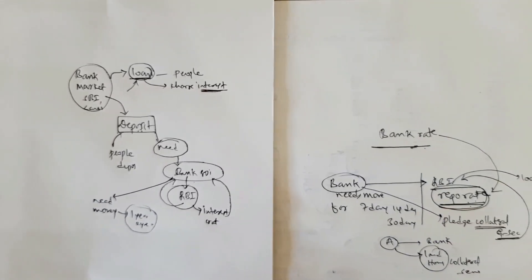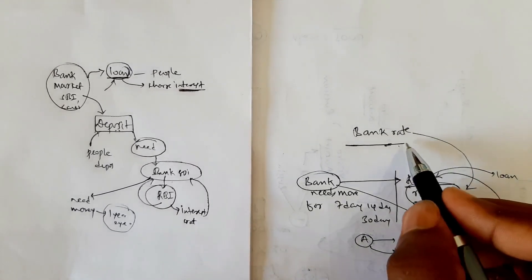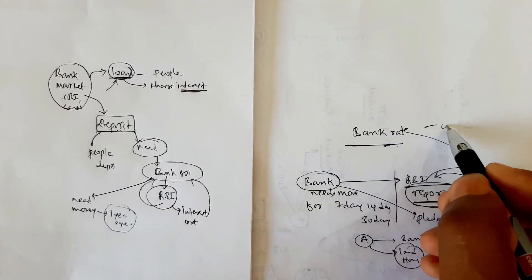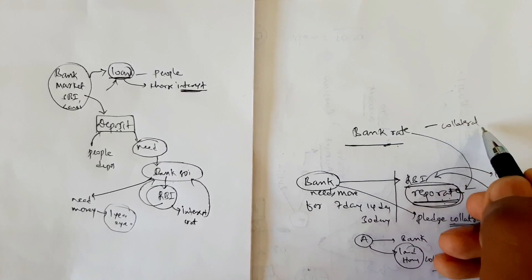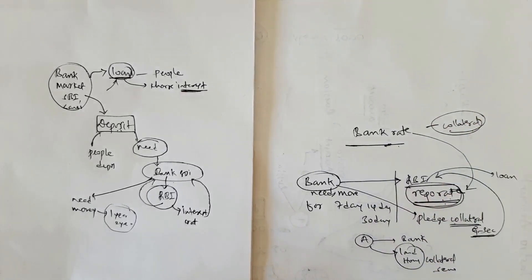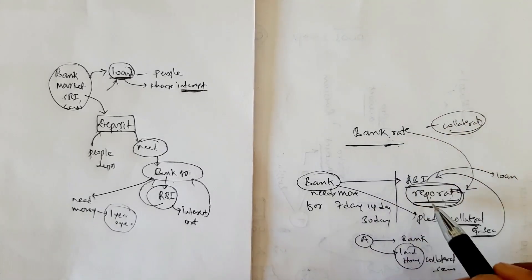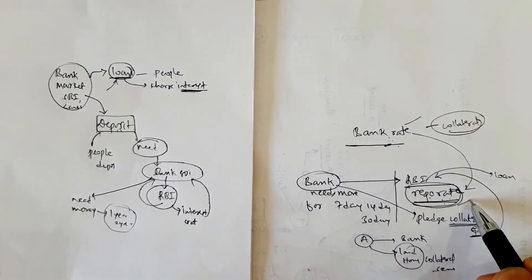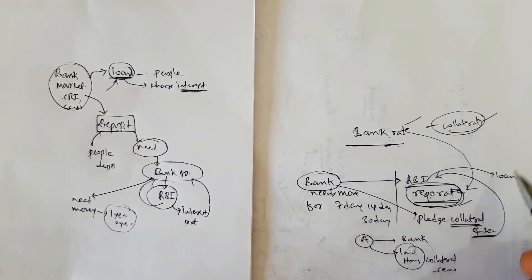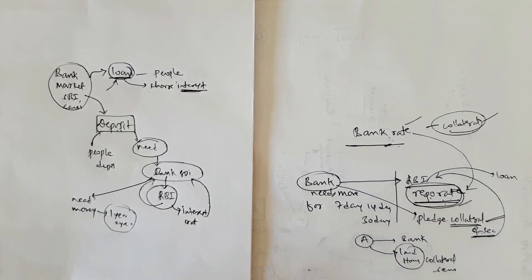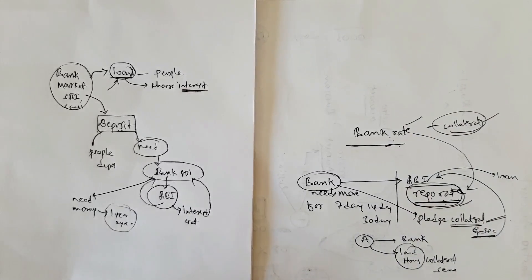Under bank rate, there is no need to pledge collateral. So the differences between repo rate and bank rate are: repo is short term, bank rate is long term; and collateral is needed for repo rate but not for bank rate.